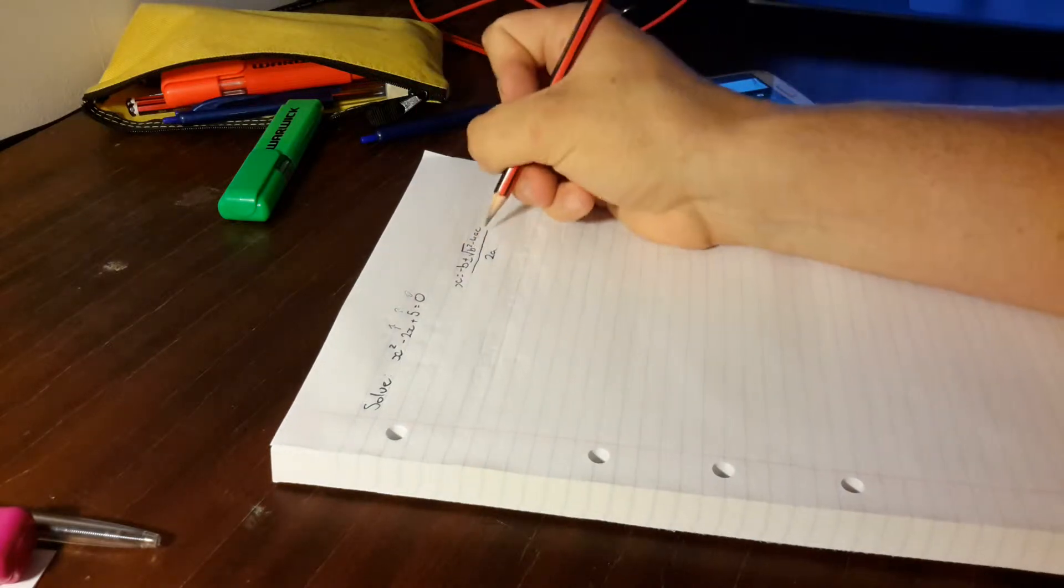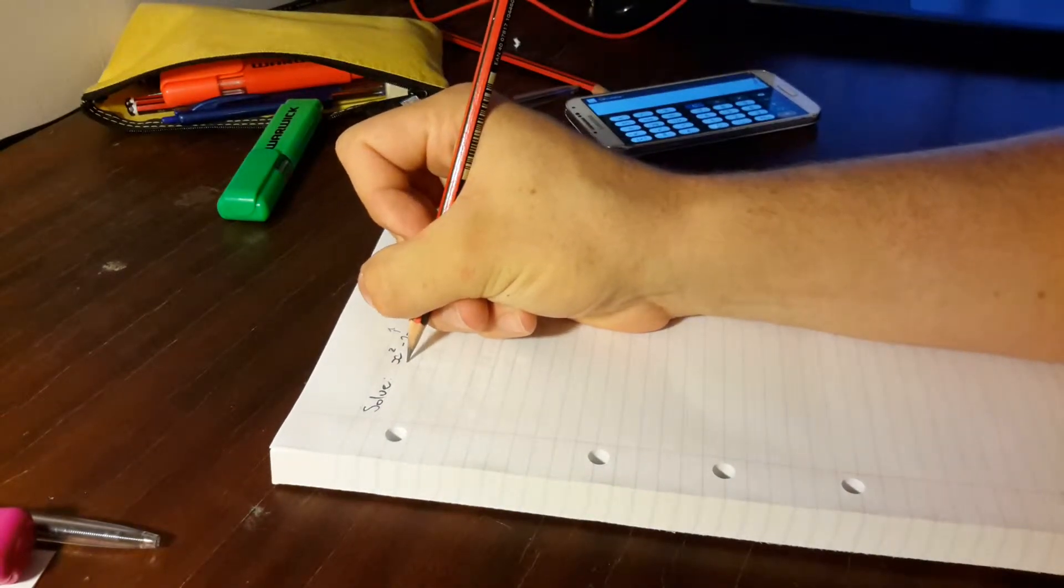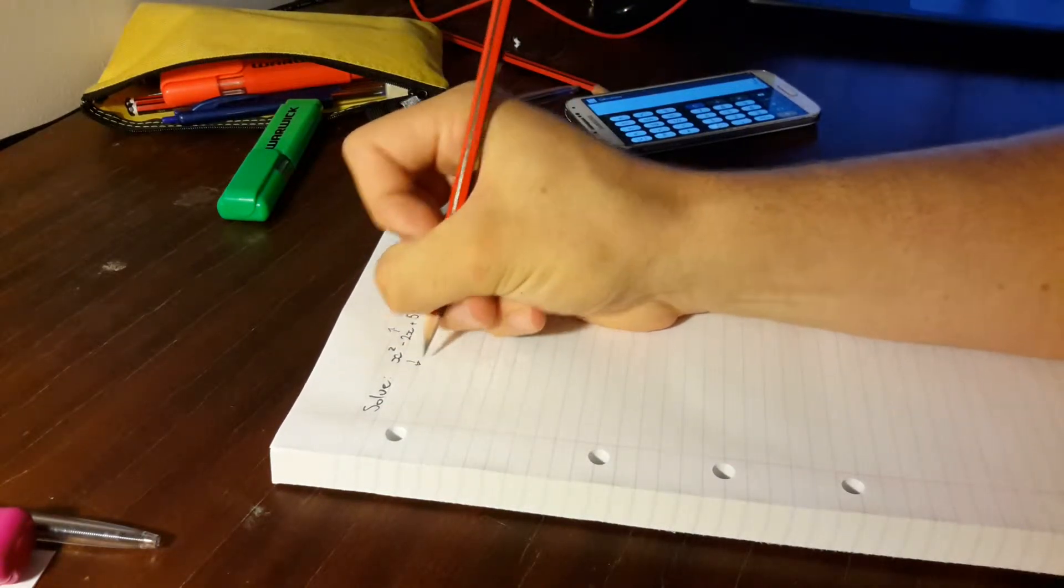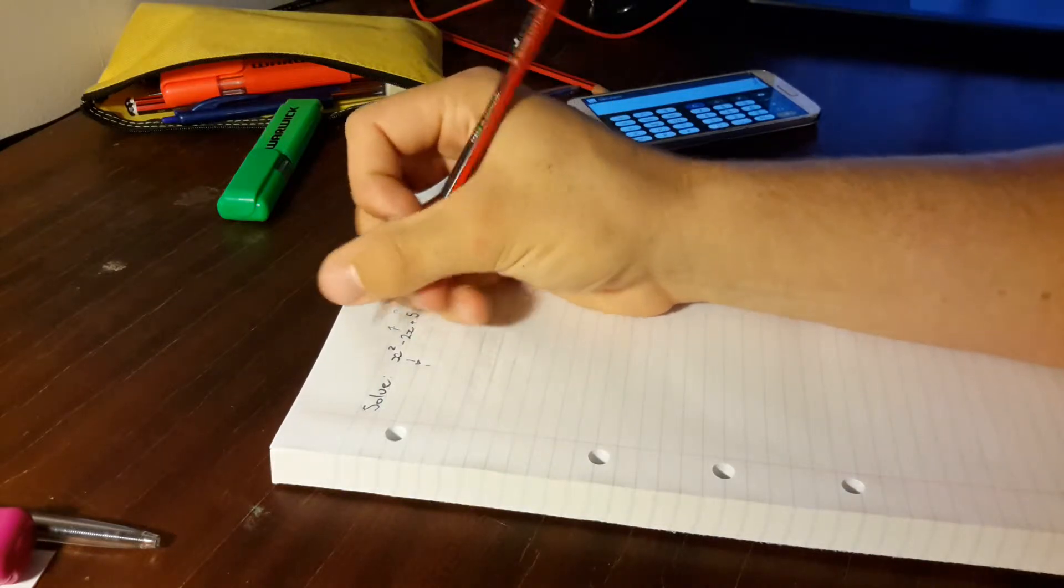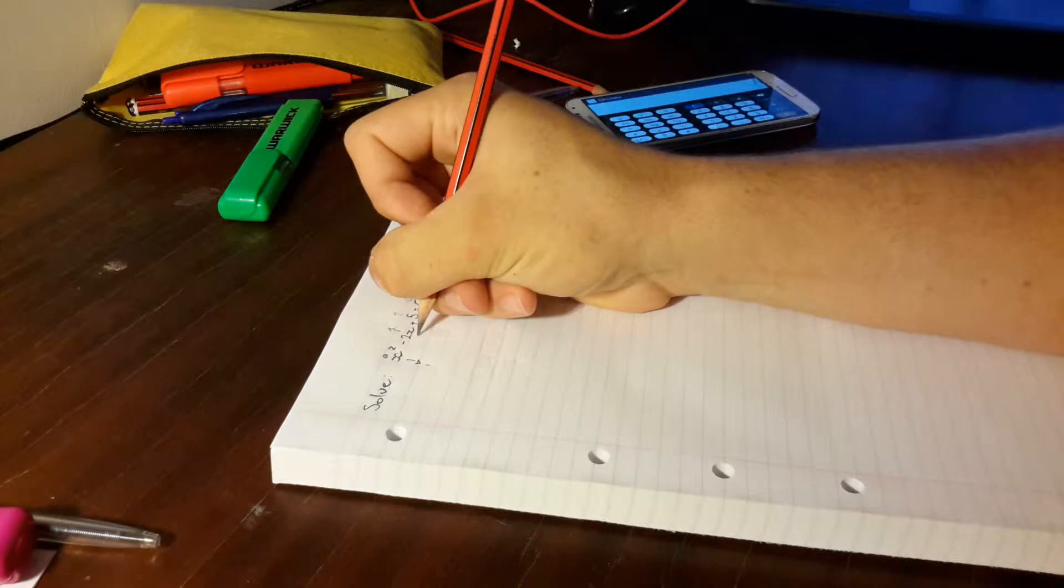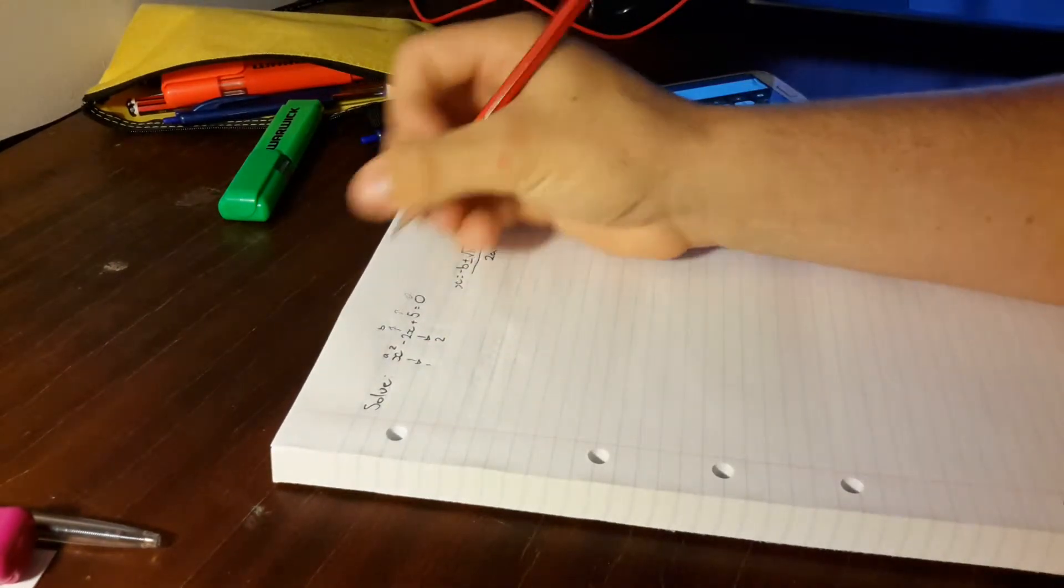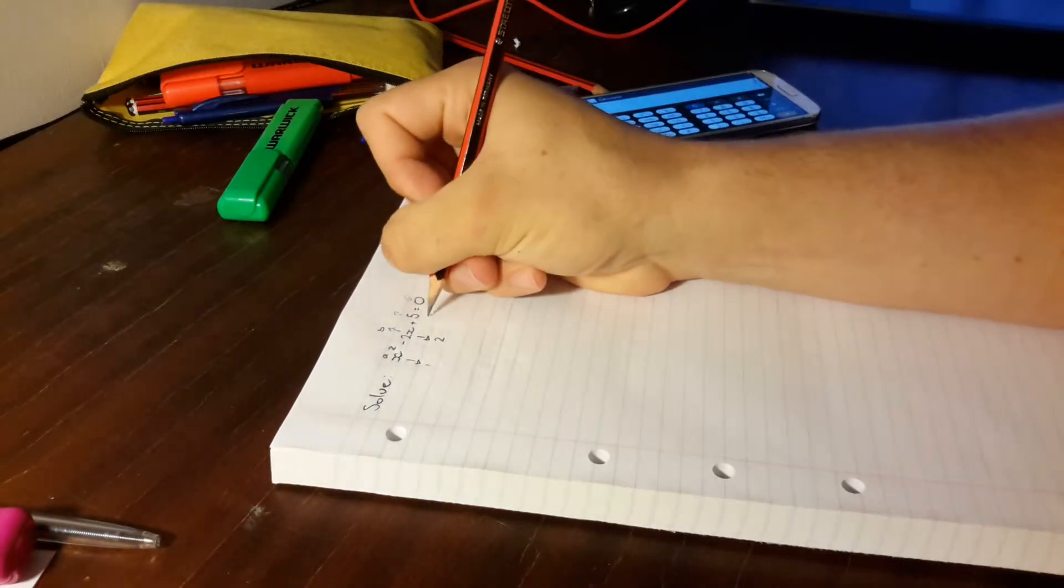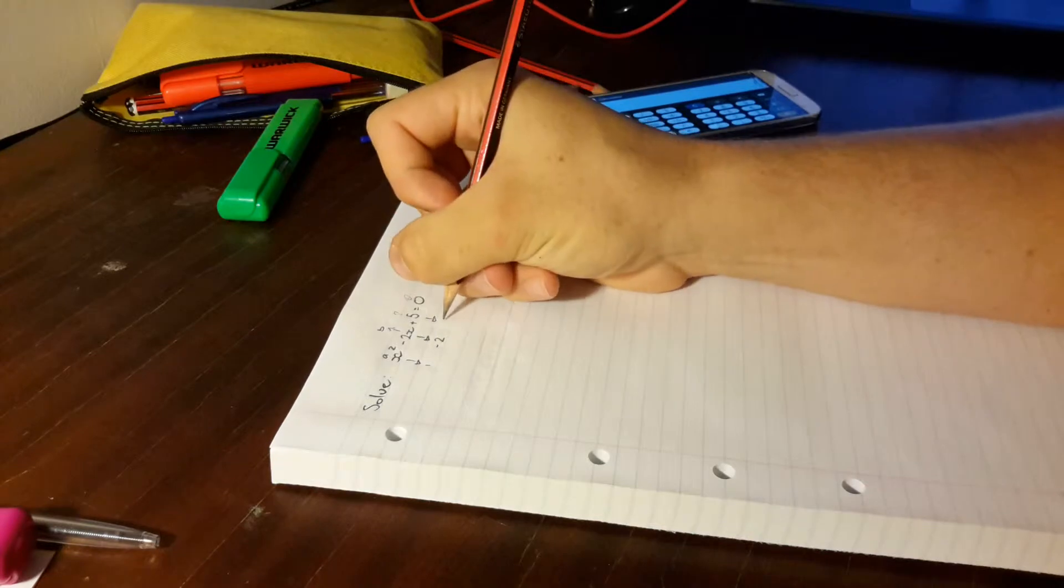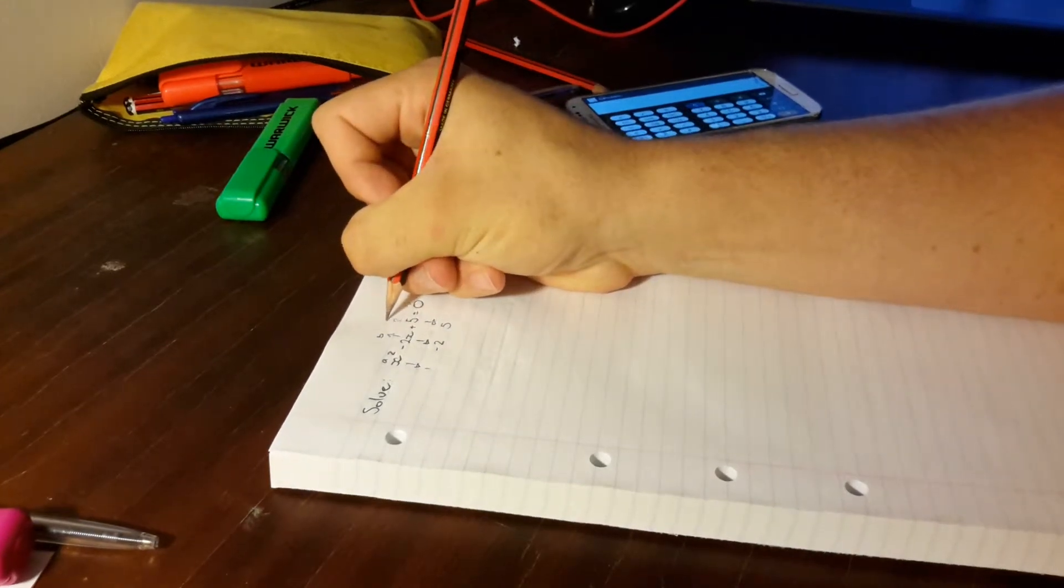So where do we get these a, b, c letters from? We take this from this equation we have here. So this first number is 1 because of x squared, and it's going to be a. And this 2 is going to be 2x. This is going to be 2 and it's going to be b. And then this last one is going to be 5, sorry, it's going to be 5 and it's also going to be known as c.